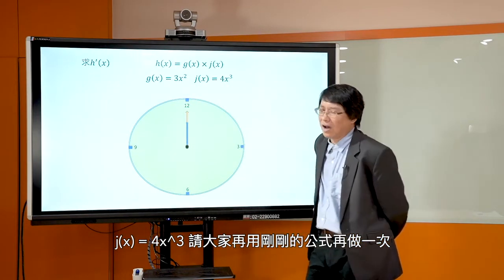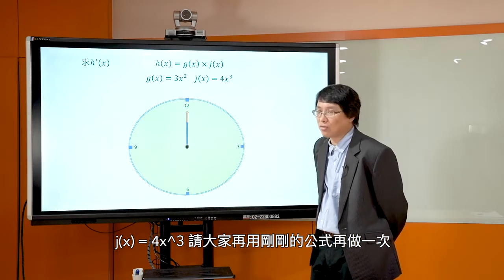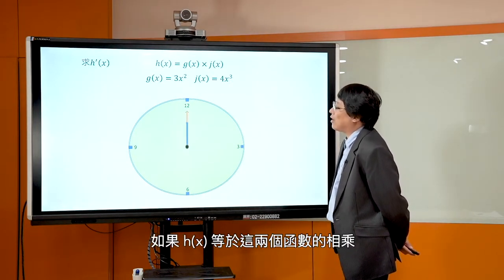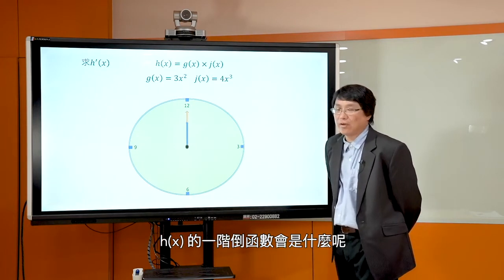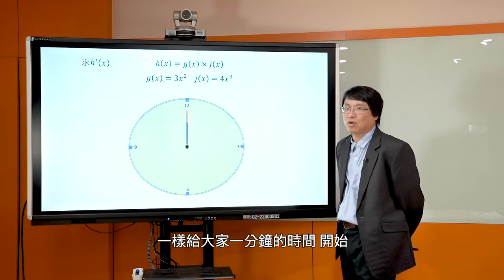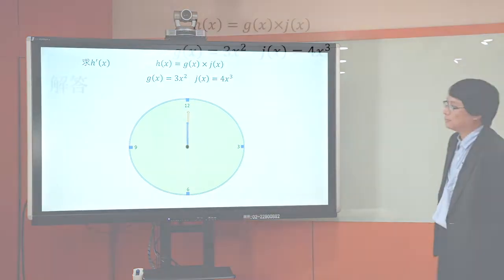所以这个就是前微后不微加上后微前不微。所以我们就用这个公式，然后你就再把它拆开，再把它相乘拆开计算，最后你就会得到答案会是 60x³ + 66x² + 16x。请问各位有做对了吗？希望大家都有做对。好，那接下来我们再让大家来做，一样是这样一个题目 H = g × j，这一次 g 比较简单是 3x²，j = 4x³。请大家再用刚刚的公式再做一次，如果 H 等于这两个函数的相乘，H 的一阶导函数会是什么呢？一样给大家一分钟的时间，我们开始。